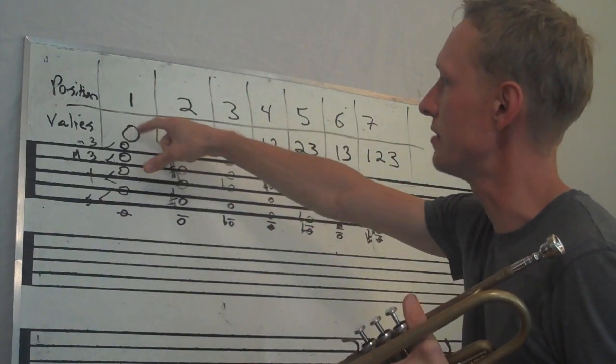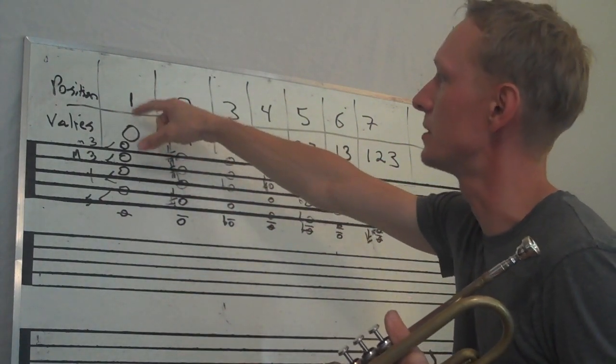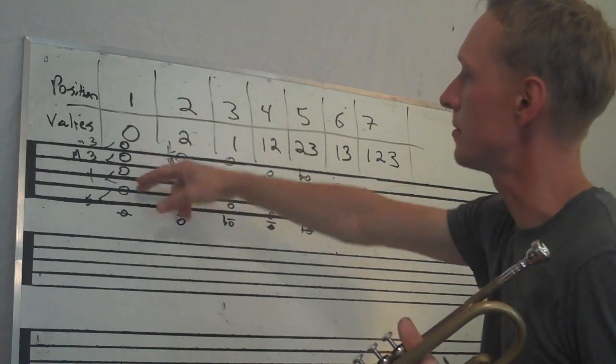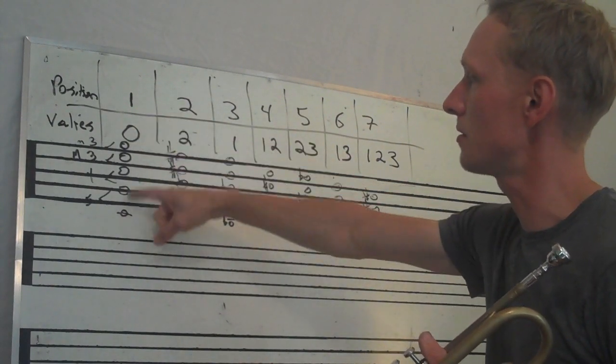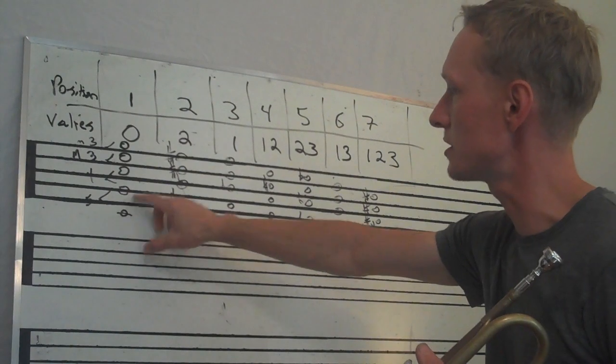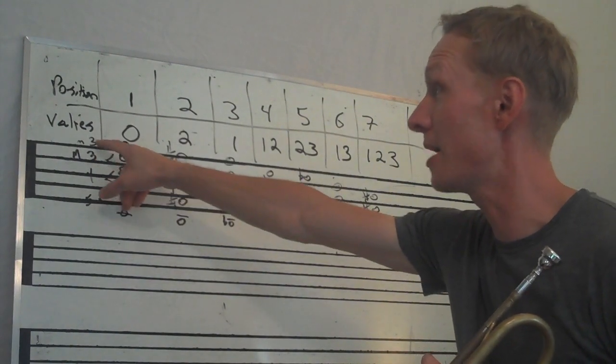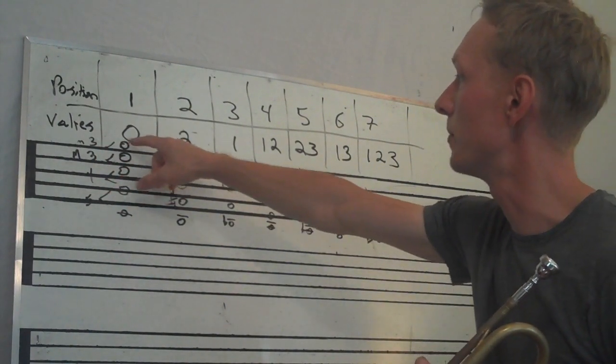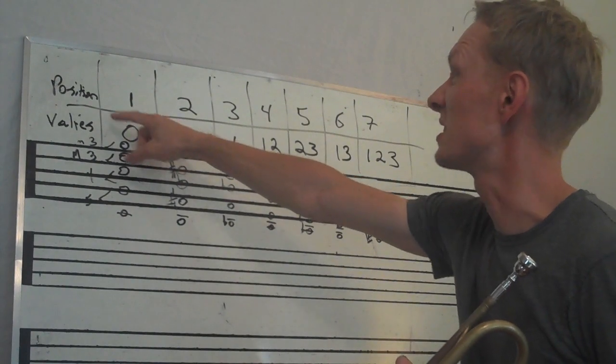So this G goes up to B-flat, up to C, then up to D, then up to E. It becomes more stepwise here. There are leaps, you can see already the leaps get smaller: fifth, fourth, major third, minor third, another minor third, a second.